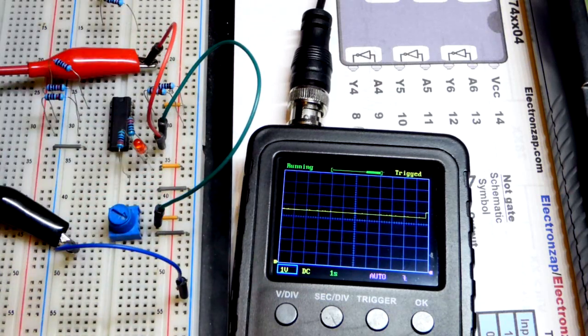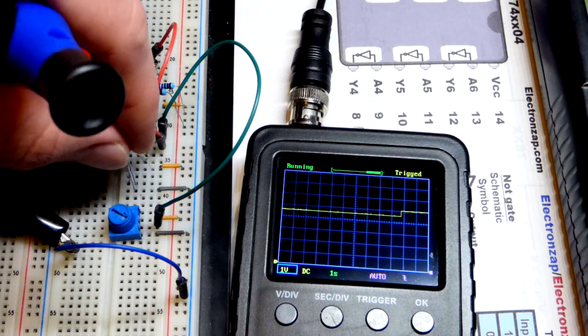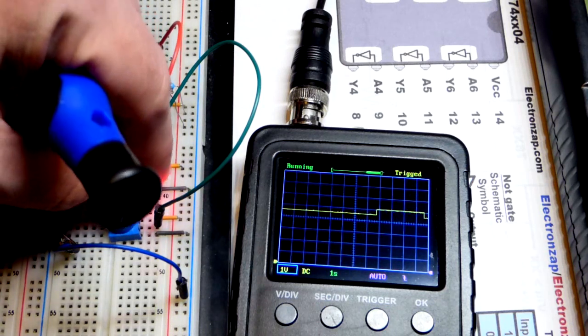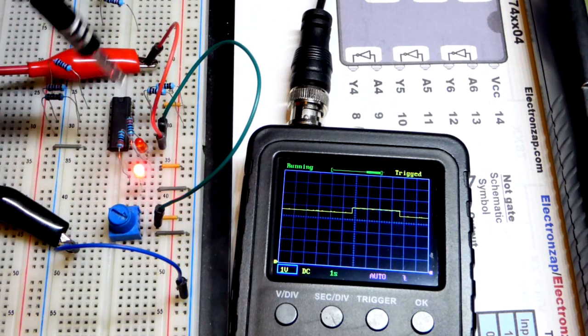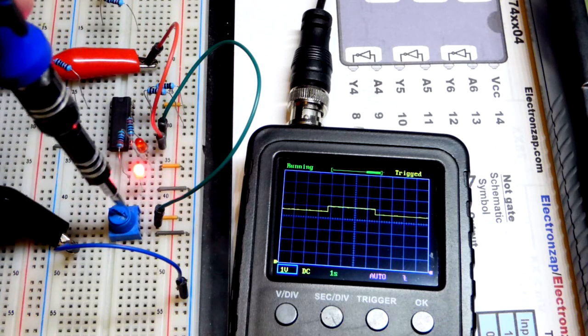It's about 5 volts. If I pluck the LED, it does go up to 5 volts. So we got the LED as a visual, long lead towards the output, short lead towards ground of course.